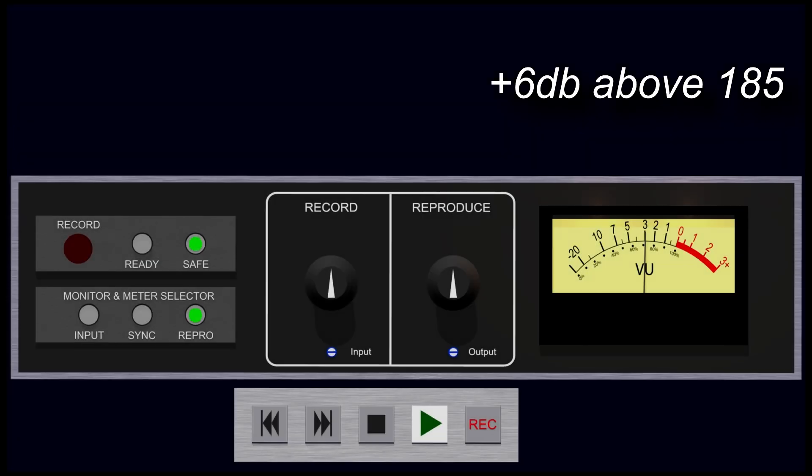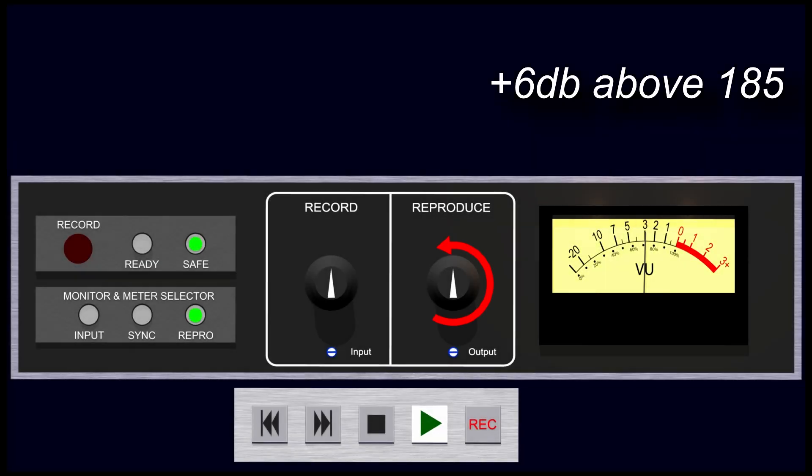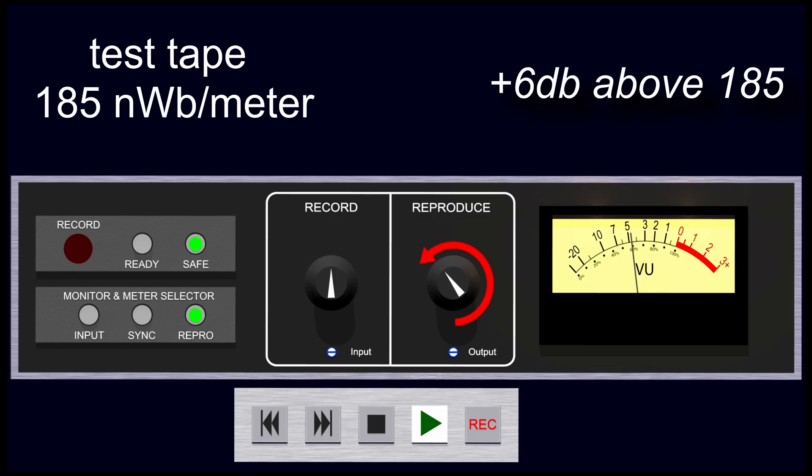The second generation of analog tape was capable of recording 6 dB hotter. So using a 185 nanoweber per meter test tape, we would set our playback level at minus 6, and compensate by bringing our record level up 6 dB to 0 VU.